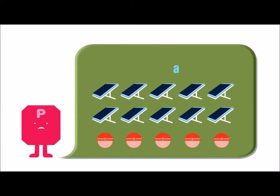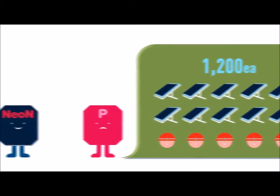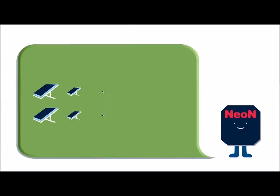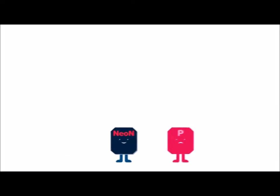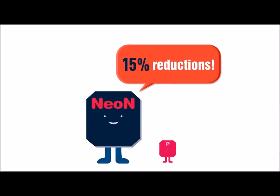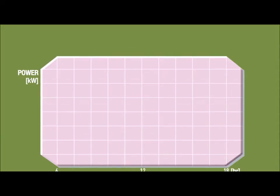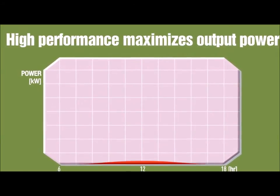Neon, however, only requires 1,000 modules. The installation costs and required surface area would decrease simultaneously. Neon's high-performing capability helps to maximize the generation rate.